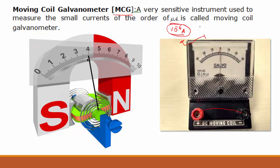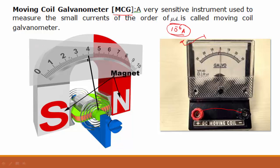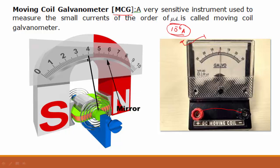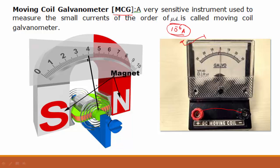It is used to measure the small amount of current. The internal structure includes a scale, a moving coil between north and south poles of a magnet, a spring, a dial, a mirror, and a pointer.